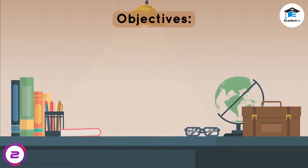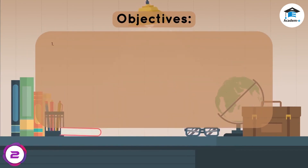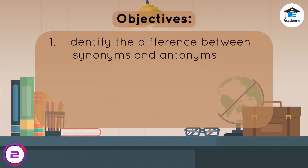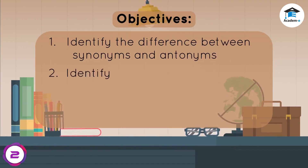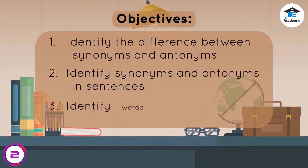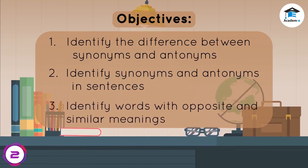Objectives. At the end of the lesson, you should be able to: First, identify the difference between synonyms and antonyms. Second, identify synonyms and antonyms in sentences. Third, identify words with opposite and similar meanings.